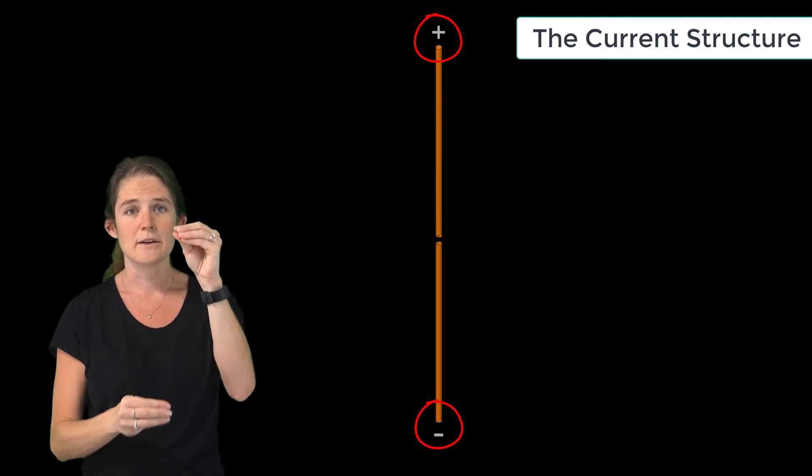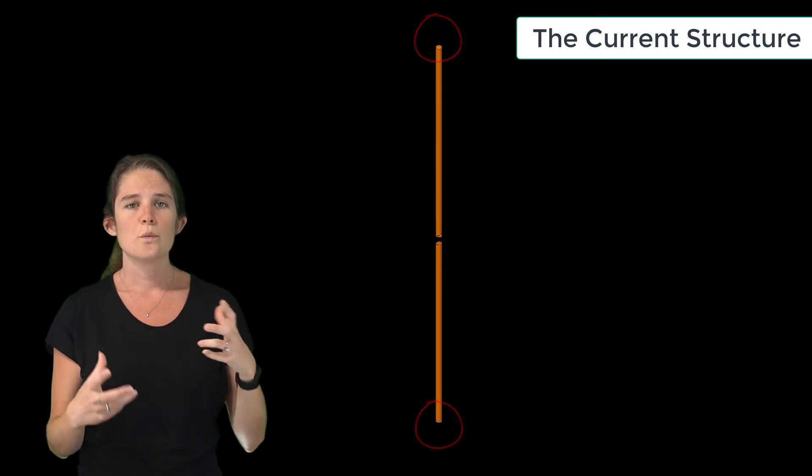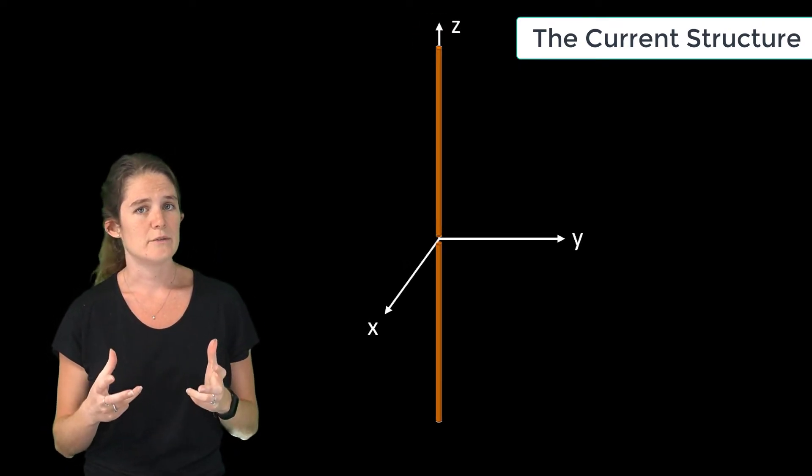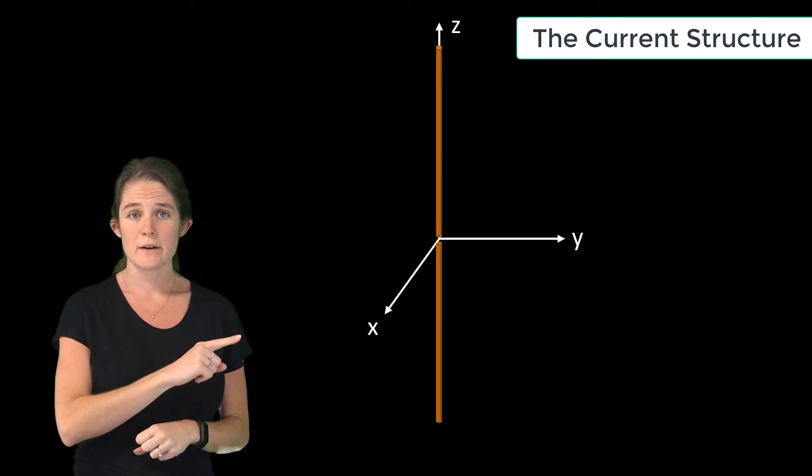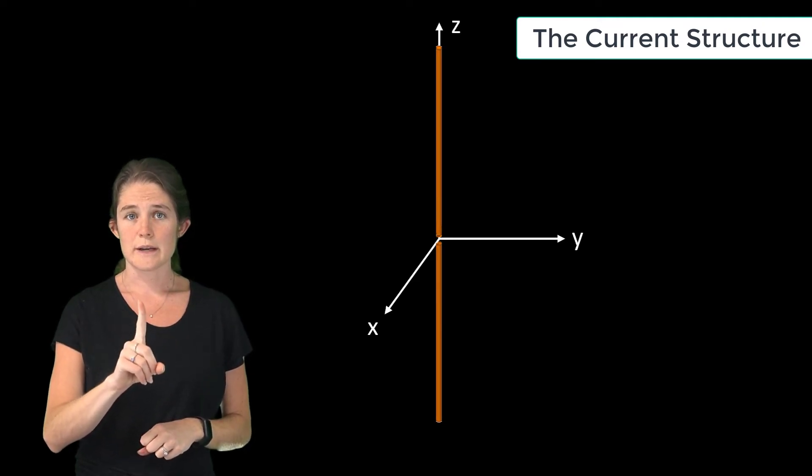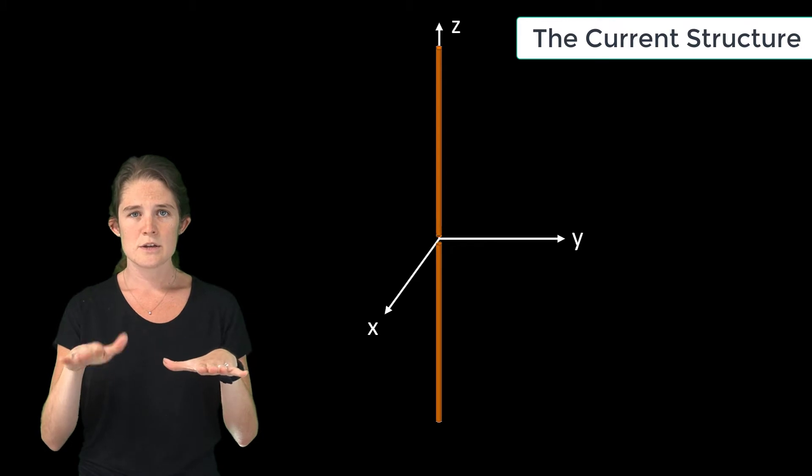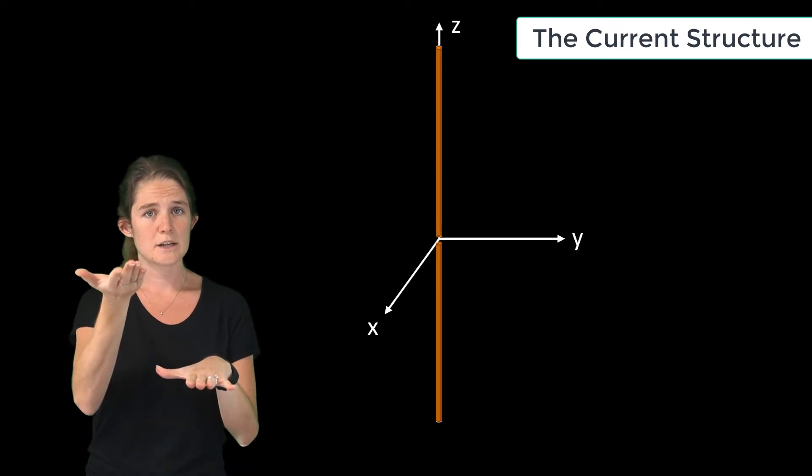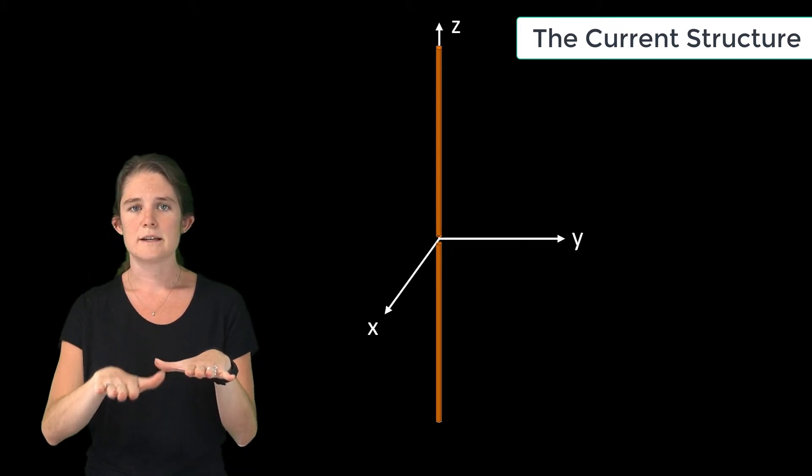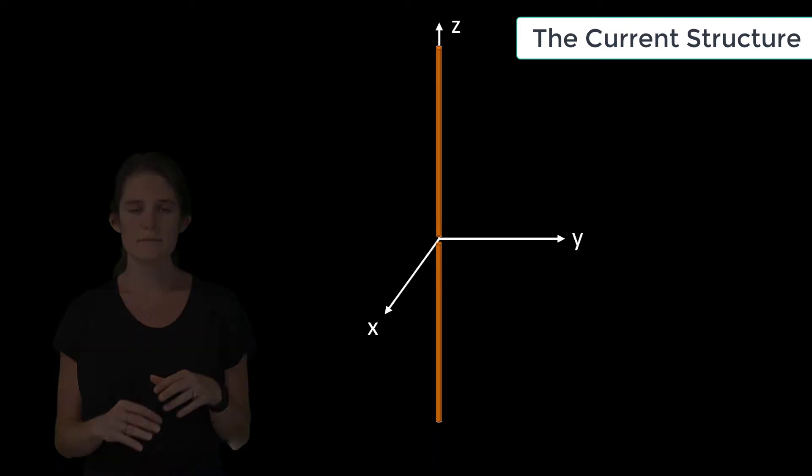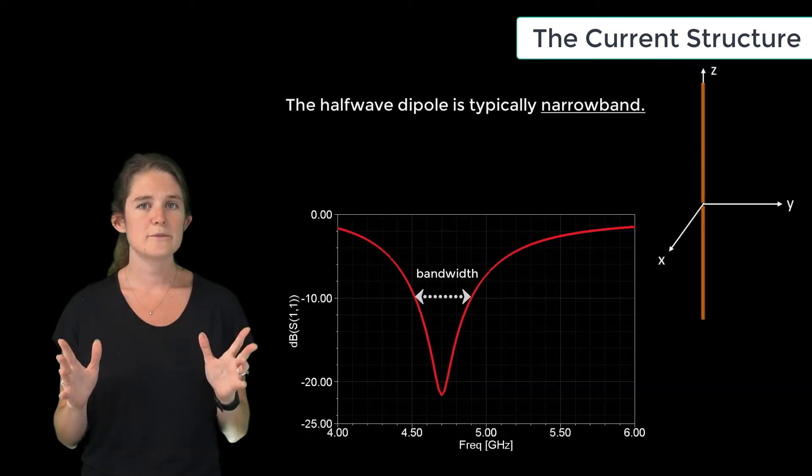We will base our discussion of the half-wave dipole on the diagram shown here, where the length of the dipole is oriented along the z-axis and centered on the xy plane, so that half the antenna is above the xy plane and half the antenna is below the half-wave dipole.